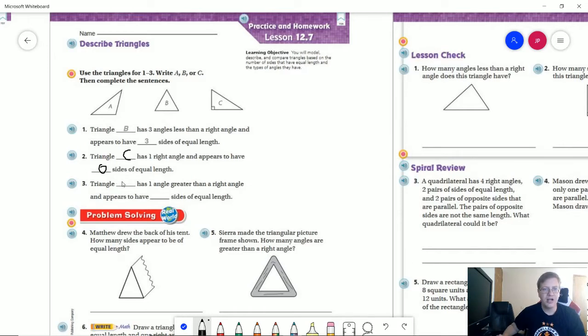Number three, our triangle that has one angle that's greater than a 90-degree angle would be letter A. So this would be our angle that's larger than a 90-degree angle. And again, it looks like it doesn't really have any sides of equal length as I'm looking at it.